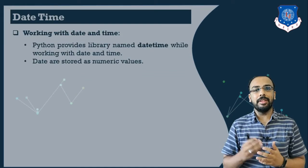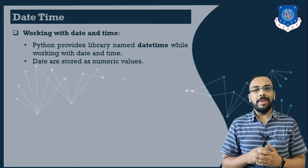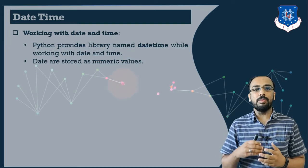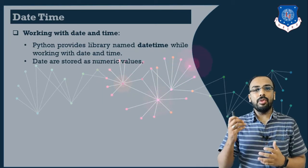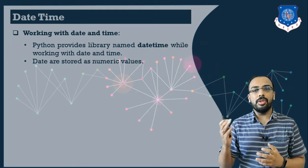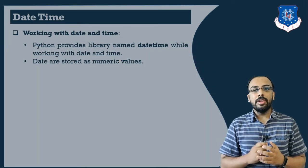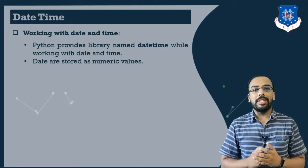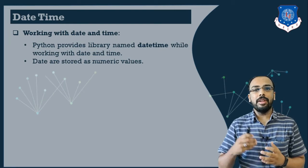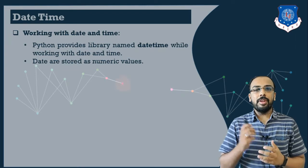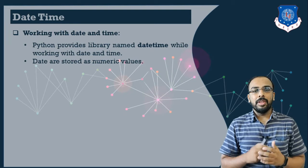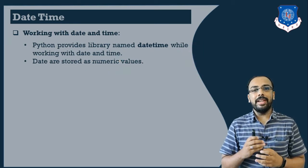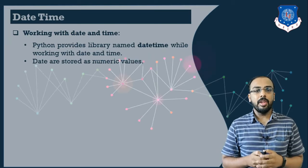Whenever we want to work with date and time in Python, Python provides us a module named datetime. This module is built-in and directly provided by Python. Whenever we want to work with datetime, we have to import this datetime module inside our Jupyter Notebook. It will return a numeric value giving us by default the entire date and entire time.